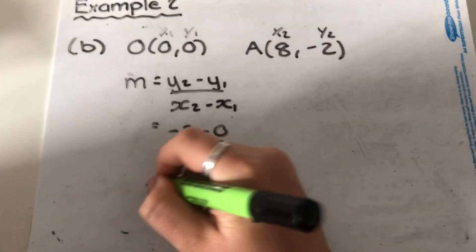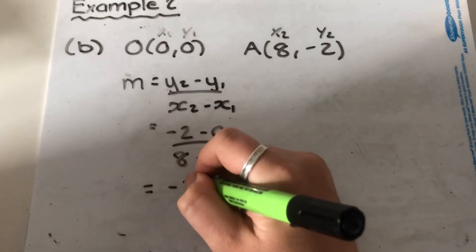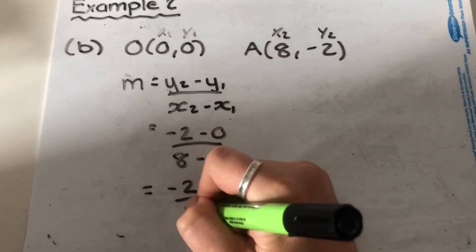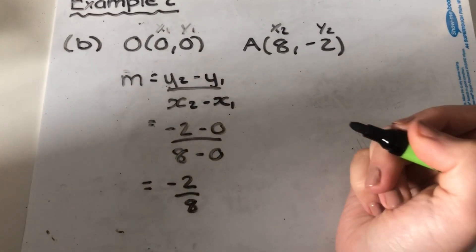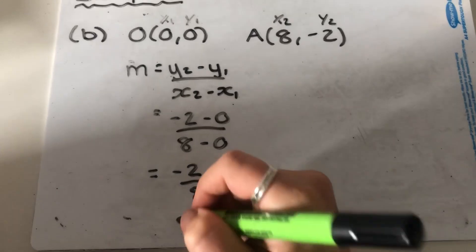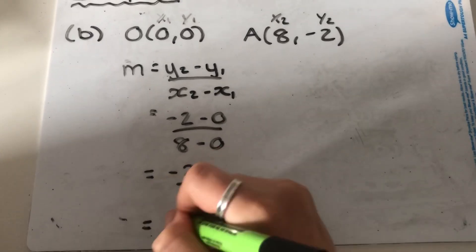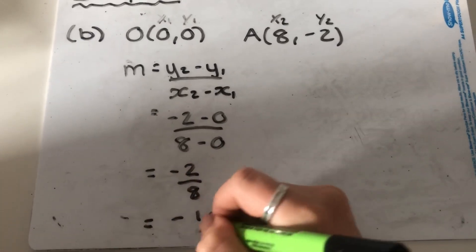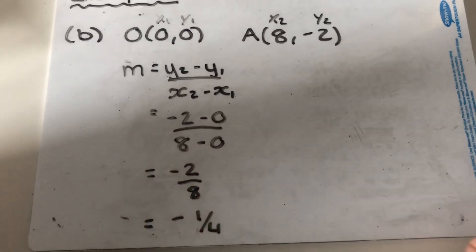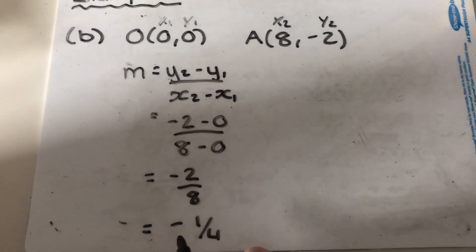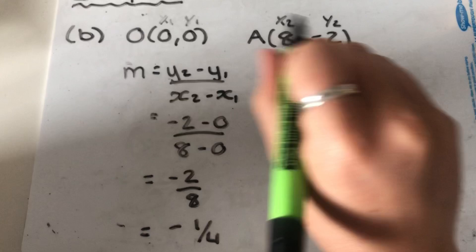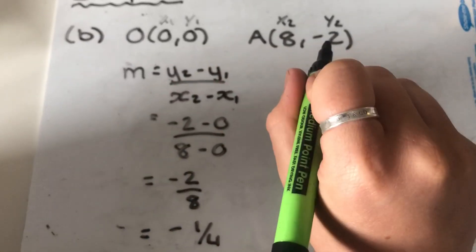So that's going to be negative two over eight, which when simplified is going to give you negative a quarter. So that's our gradient that joins these two points.